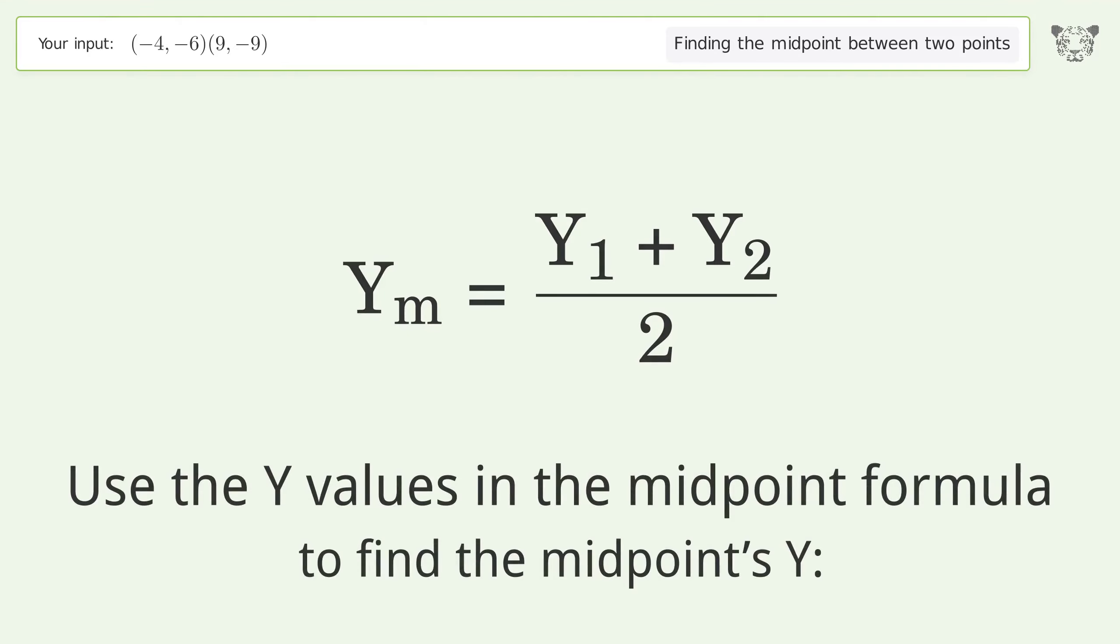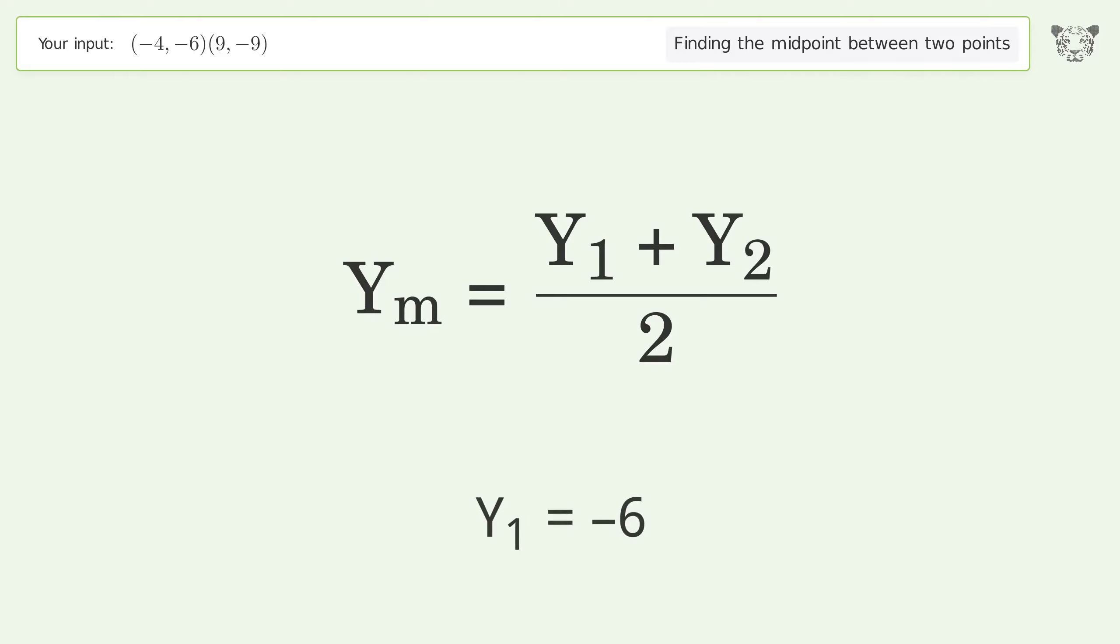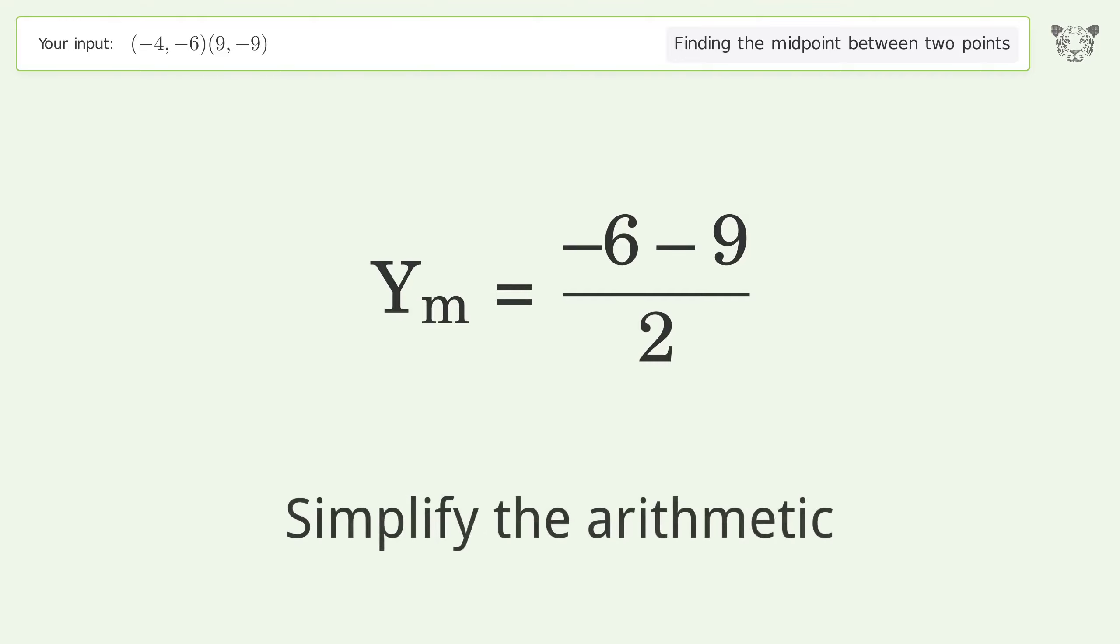Use the y values in the midpoint formula to find the midpoint's y. y1 = -6, y2 = -9. Simplify the arithmetic.